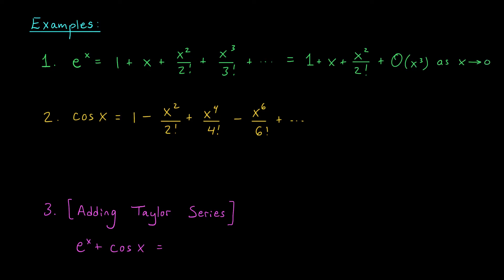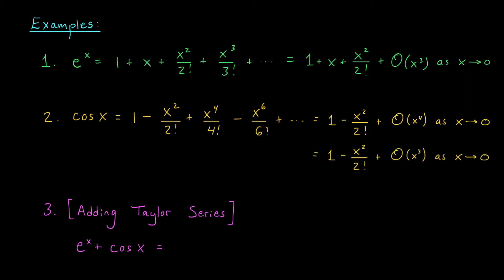We could do the same sort of thing with the Maclaurin series for cos x. Let's suppose once again that we're primarily interested in the quadratic approximation, and for the remainder, it's really just the order that's important to us. In that case, we could write our series as 1 minus x squared over 2 factorial, and recognize that all of our remainder terms have order x to the 4. We add big O of x to the 4 as x goes to 0 — nice and compact. Notice, it would also have been correct to write big O of x cubed, or big O of x squared, or big O of x. After all, if our remainder is bounded by a constant times x to the 4, it's also bounded by smaller powers. However, writing x to the 4 gives us the most information about the order of our remainder.